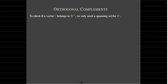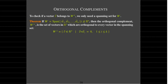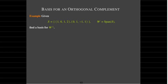Now suppose I have a spanning set for W. If I want to see if a vector V belongs to W-perp, I just have to check it against all the vectors in the spanning set. Formally, if W is spanned by k vectors W1 through Wk, then anything in the orthogonal complement is going to be orthogonal to all of those vectors. With those k vectors, I form the dot product, set it equal to zero, and come up with a characterization — a basis — for the orthogonal complement.